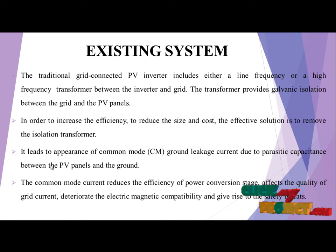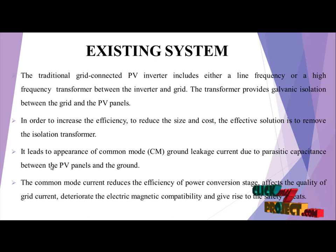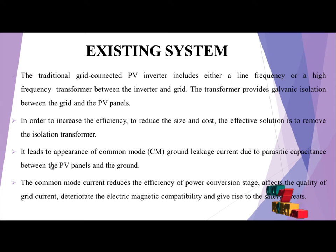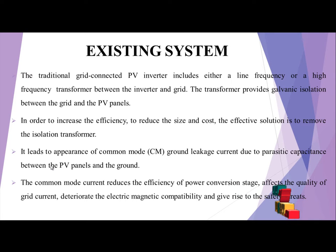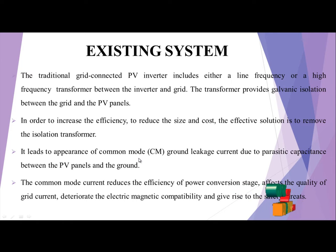In the existing system, the traditional grid-connected PV inverter includes either a line frequency or high frequency transformer between the inverter and grid. The transformer provides galvanic isolation between the grid and PV panels. In order to increase the efficiency, reduce the size and cost, removing the isolation transformer is proposed, but it leads to the appearance of common mode ground leakage due to parasitic capacitance between the PV panel and ground. The common mode current reduces the efficiency of power conversion, affects the quality of grid connection, deteriorates electromagnetic compatibility, and gives rise to safety threats.